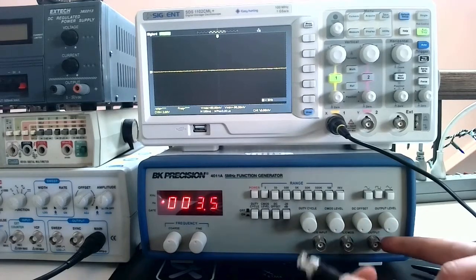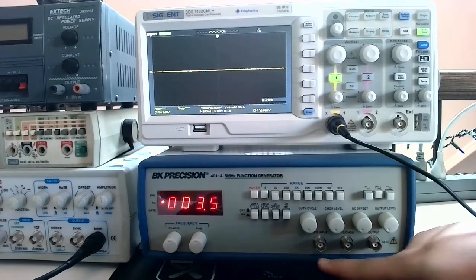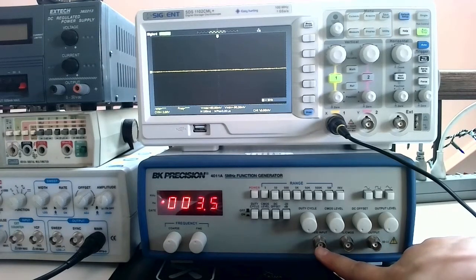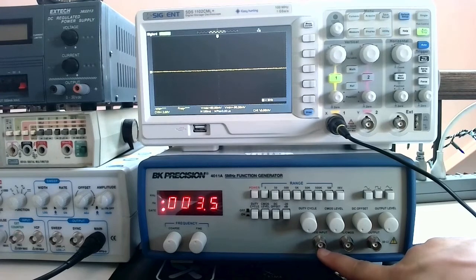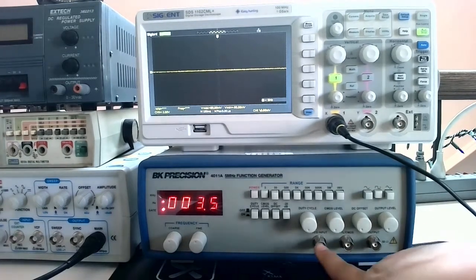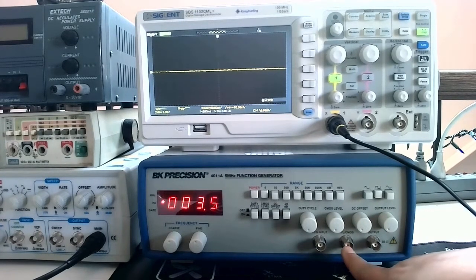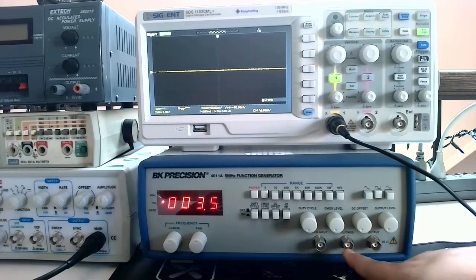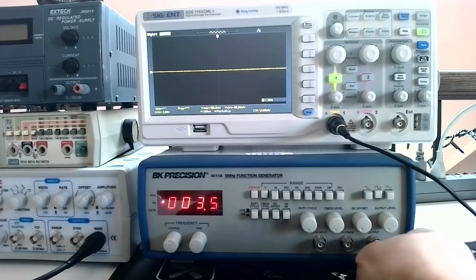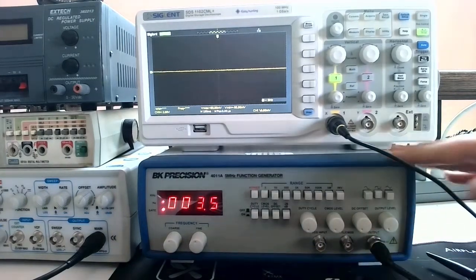The BNC cable, we are going to be using the BNC connector that says output. This is VCG, this means voltage controlled generator, so basically you can use a voltage to change the frequency, we will not use that. This is TTL CMOS, this is for digital logic circuits, we will not be doing this. What we want is this one that says output. We're just going to clip on that BNC cable until it's nice and locked.